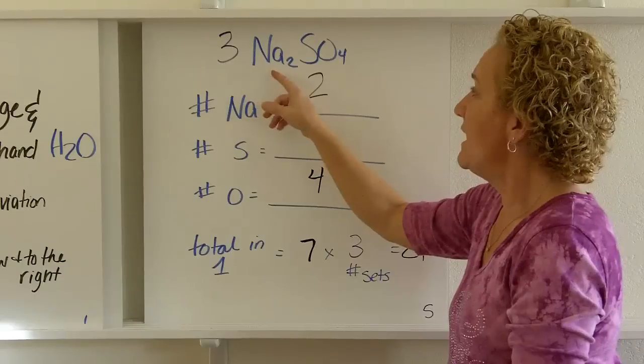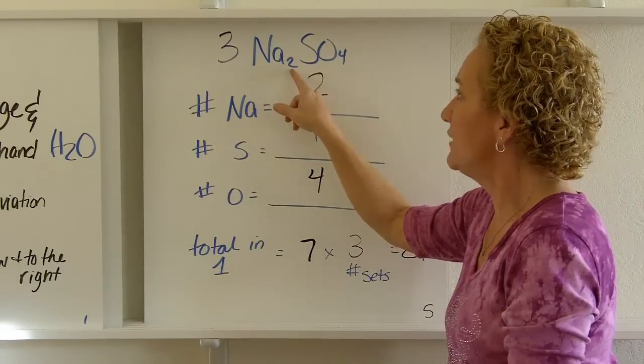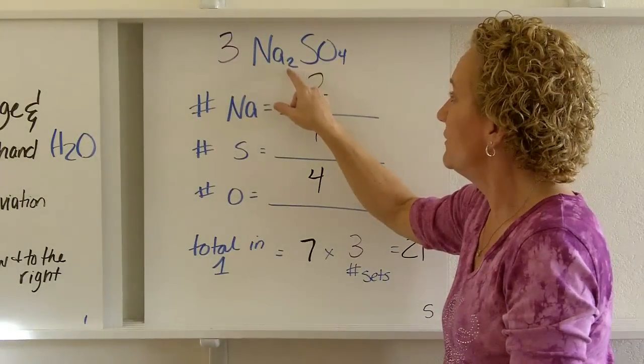Another example, 3Na2SO4. How many sodiums? This tells you how many sodiums. We have 2. Now, we're not worried about the 3 yet. We're just looking at the 2, the subscript. 2 sodiums.